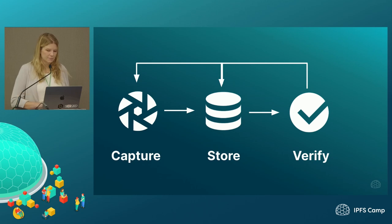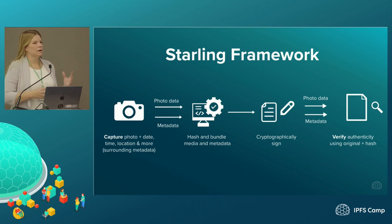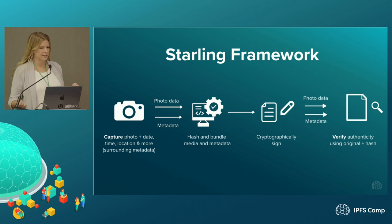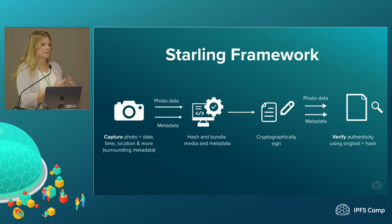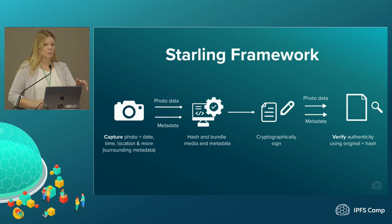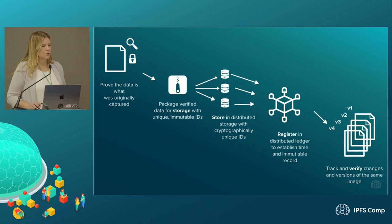The basic Starling Lab framework: we take a piece of hardware or an app and prototype how we can bring it through this workflow, working with a journalism fellow or human rights investigator. We capture a photo with its metadata — date, time, location, and more — then hash and bundle it. We cryptographically hash and sign that bundle to add an identity to it. People can then verify that authenticity. What's really important is that people can prove what was originally captured after we bundle and sign it.